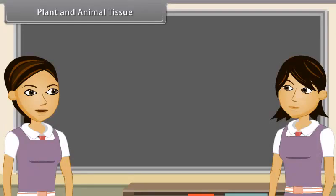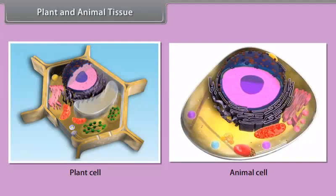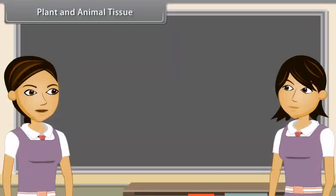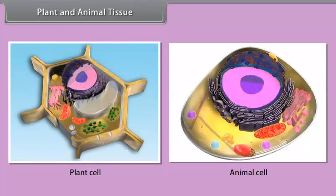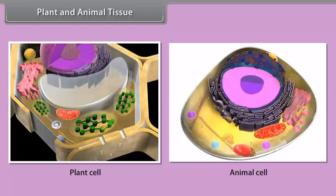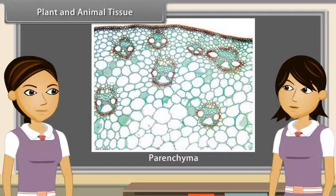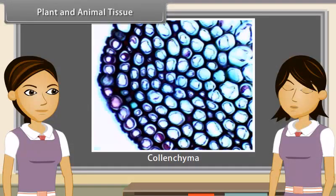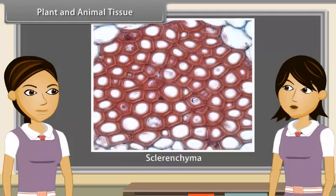Plants and animals both are living organisms, but their internal structures are entirely different. One major difference is that plants are autotrophic — they can make their own food in the presence of sunlight, carbon dioxide and water with the help of chloroplasts. They are fixed at one place, so the tissues in plants are mainly of types which give them strength. Some of them are also dead tissues which give mechanical strength.